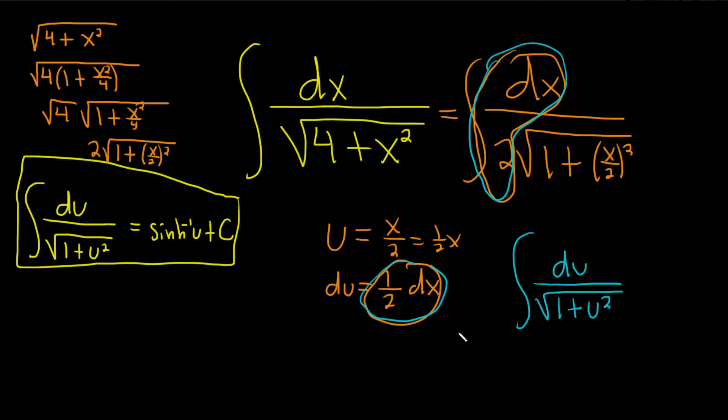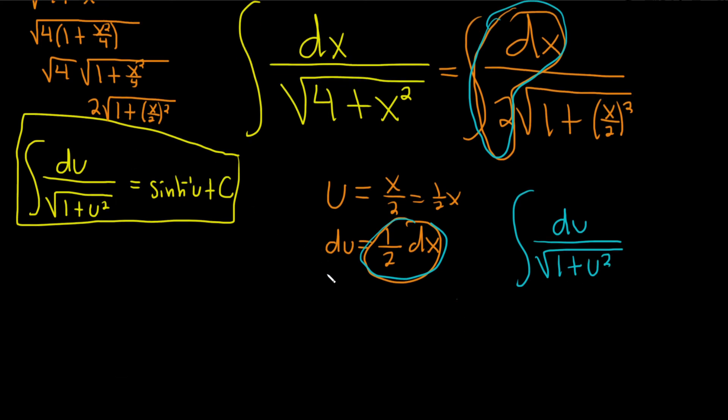And now we can just apply the formula. Fantastic. So this is equal to, give ourselves some room, sinh inverse of u plus our constant C. The number went away. It just really worked out perfect.